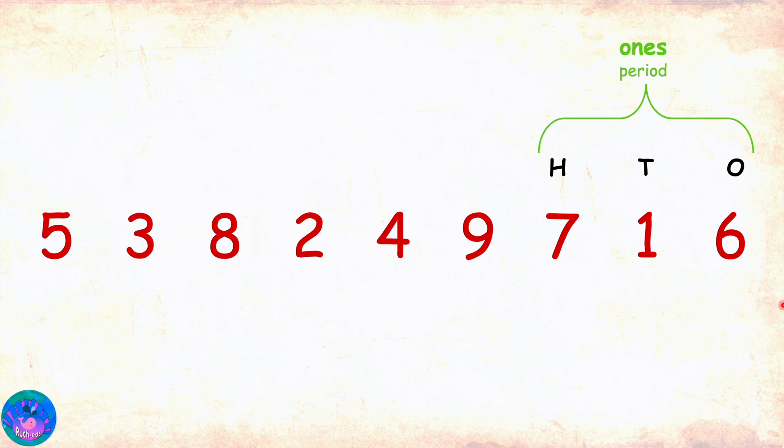After ones period, we have the thousands period made up of thousands and ten thousands places. After ten thousands place in the Indian system, we have lakh, which is abbreviated to L, and ten lakh, abbreviated to TL. The lakh and ten lakh places form the lakhs period.